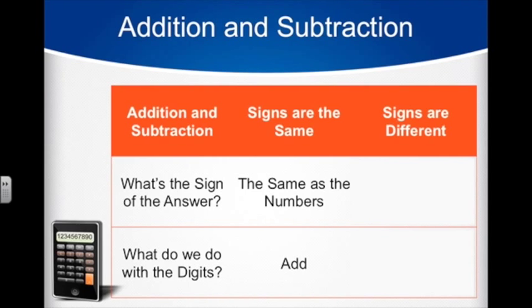If the signs are different, your answer takes its sign from whichever number is bigger. Now obviously positive numbers are always greater than negatives, but here we're just looking at their values, ignoring the signs. Once we know which sign to use, we have to find the difference of the numbers, or subtract the digits.